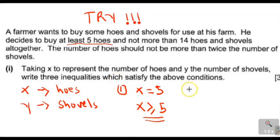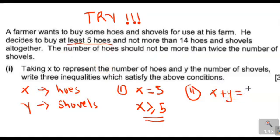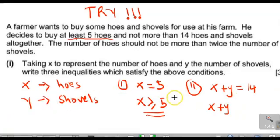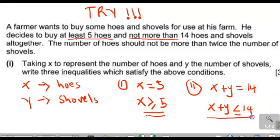For our second inequality: 'and not more than 14 hoys and shovels altogether,' meaning when we combine X plus Y equals 14 as an equation. When we combine the number of hoys and the number of shovels, they should not be more than 14. The inequality sign for 'not more than' is less than or equal to. So our second inequality is X + Y ≤ 14 — it should not go beyond 14.